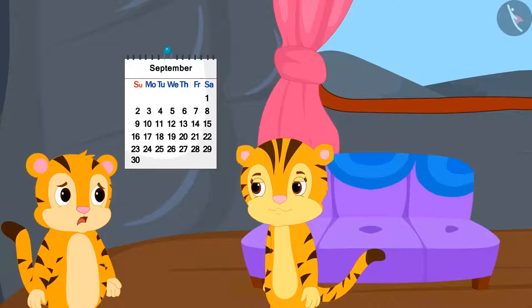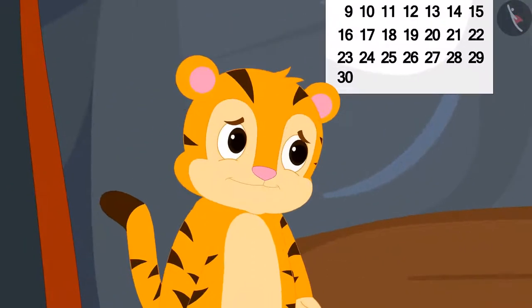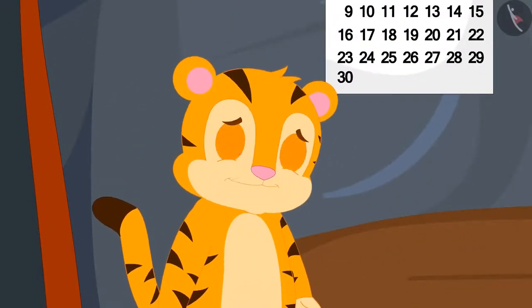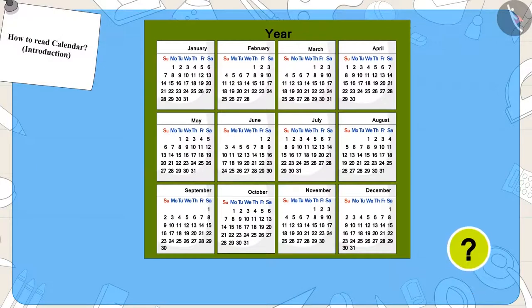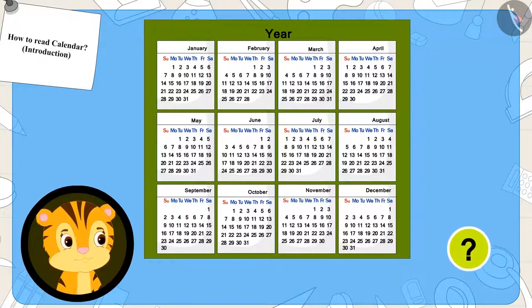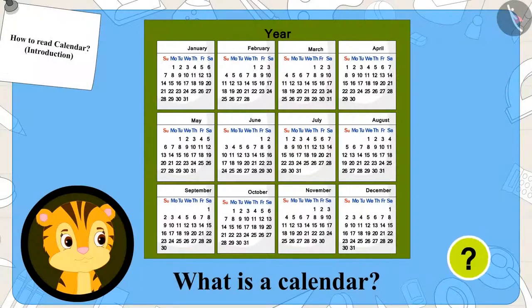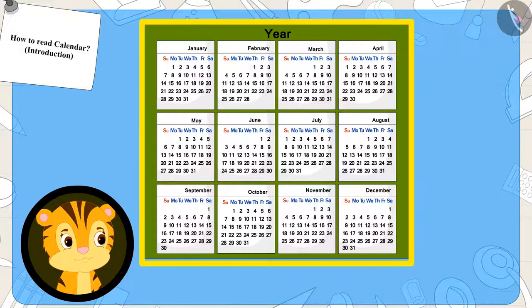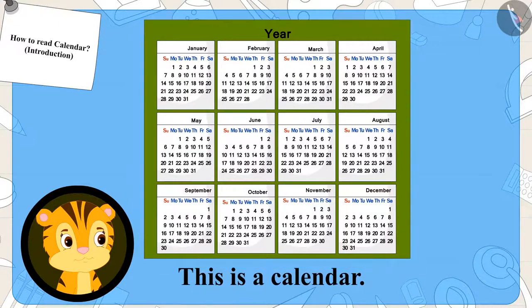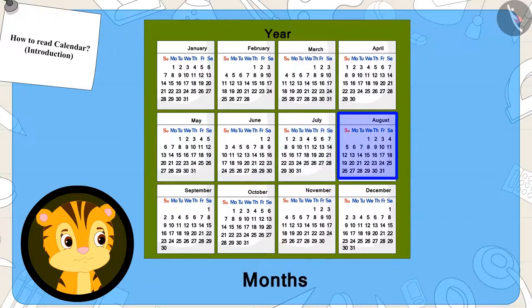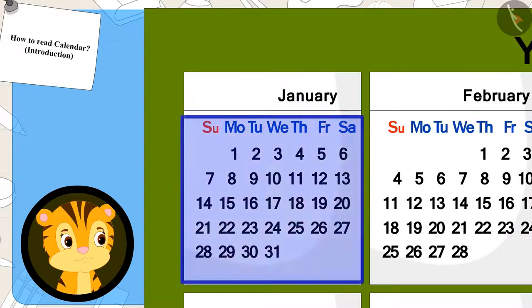He asked his mother, what is a calendar, mom? Kids, do you know what a calendar is? Come see what Sher Khan's mother is explaining to him about the calendar. Sher Khan's mother is explaining that this is a calendar — it depicts the months of the whole year and the days in those months.